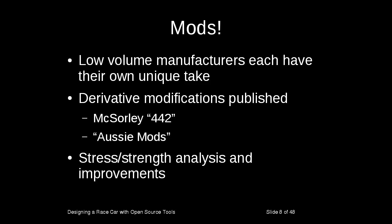Once the book had been published there was a public record of a design for building these cars, and they became more popular. People started building the Haynes Roadster, as it was called, and finding a few mistakes in the book. Communities built up around actually building these cars, as well as low-volume manufacturers who each had their own take on the design. Some of those derivatives were published by the manufacturers or by communities so people didn't have to keep reinventing the wheel. For example, McSorley produced a 442 modification — adding 4 inches in length, 4 inches in width, and 2 inches in height — because the modern human is larger than the human of the 1950s.